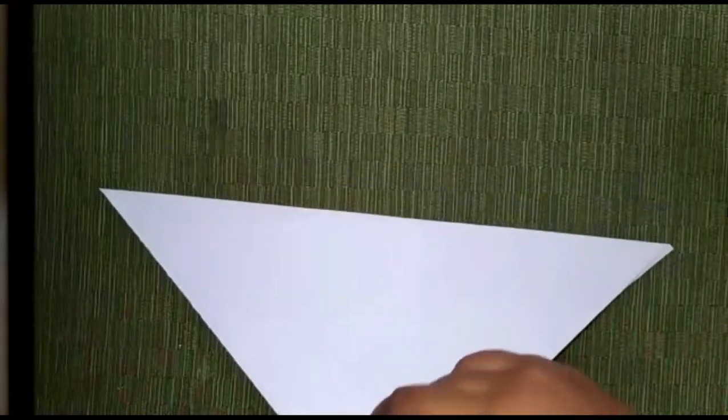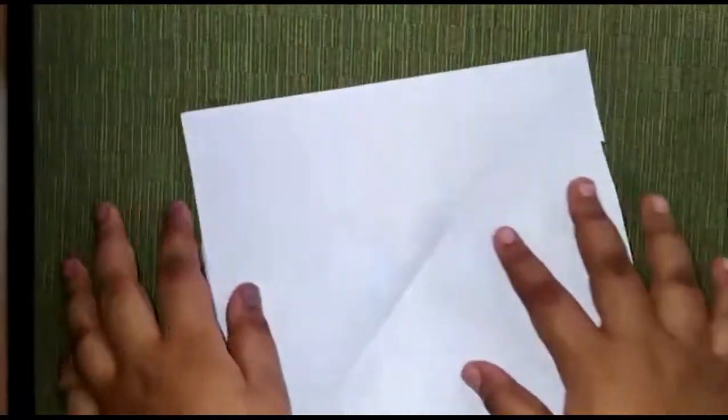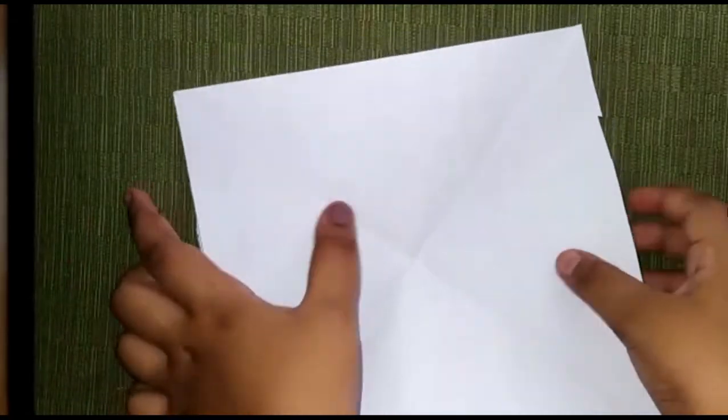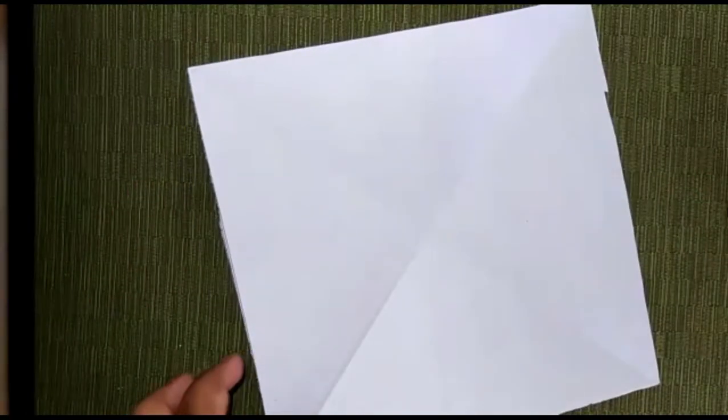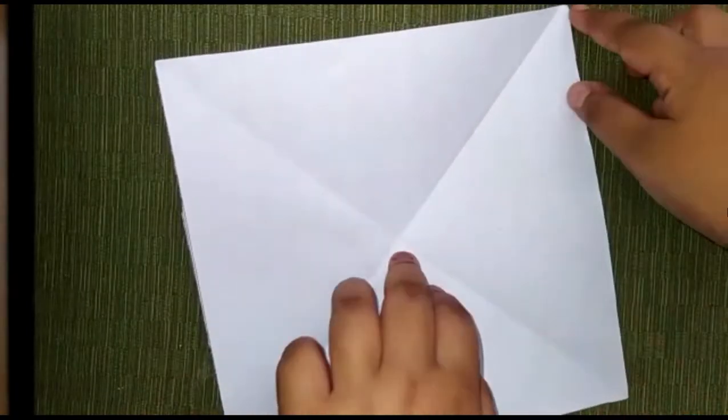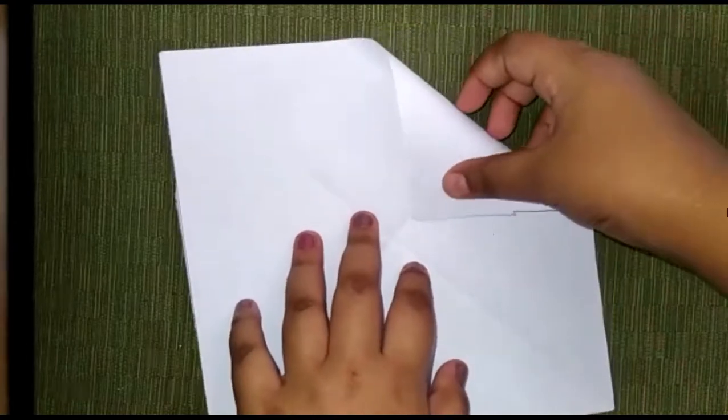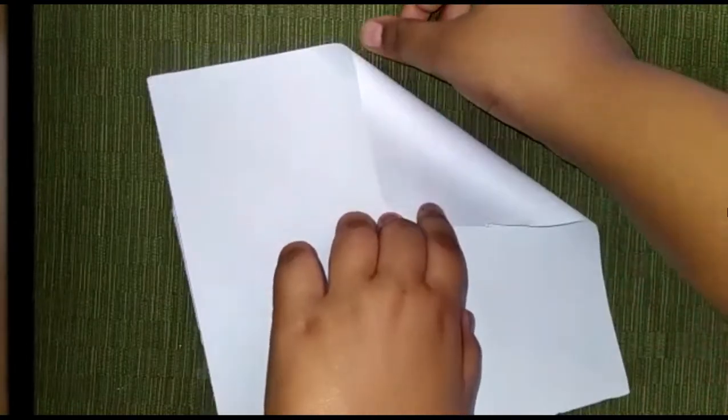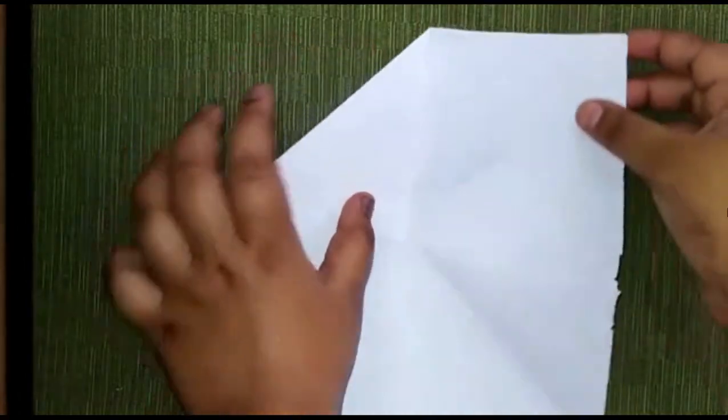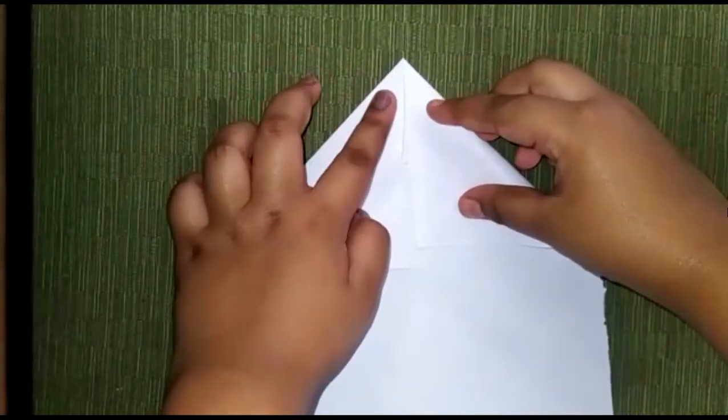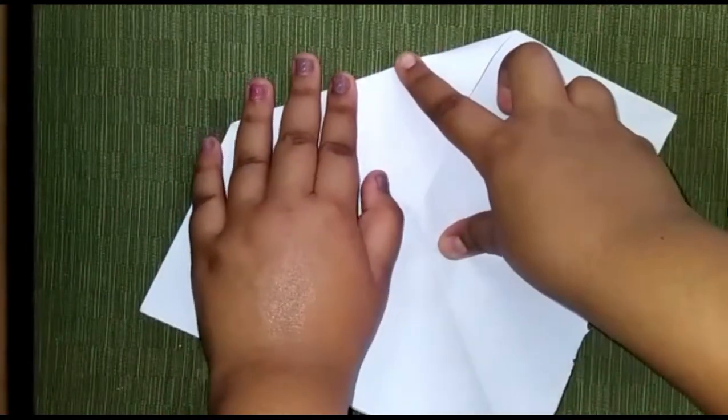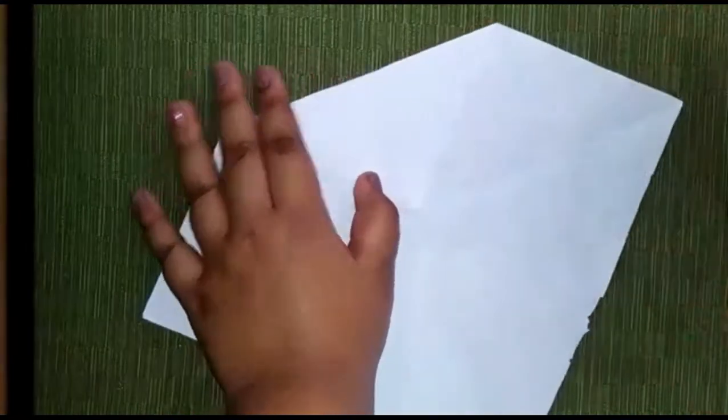So after this you're going to be folding these corners into the middle where the line is. Let's do that, I'm going to do it for all the sides. And it has to match the corners - if it doesn't match, that means it will not be done correctly.